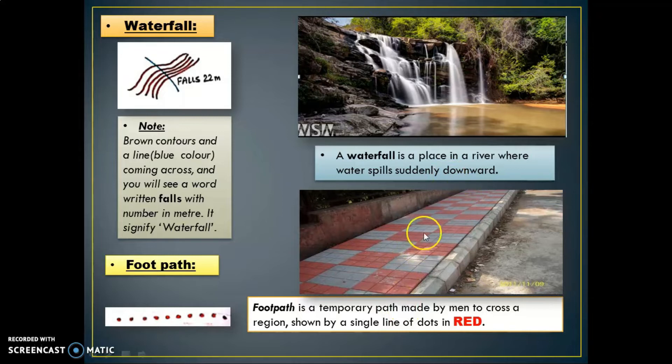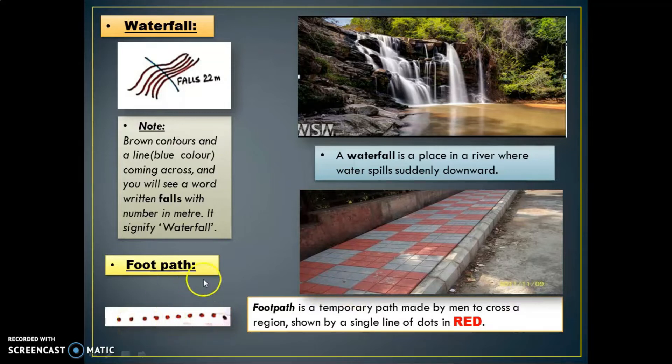Footpath is a temporary path made by men to cross a region, and it is shown by a single line of dots in red. This is how you have to draw it.